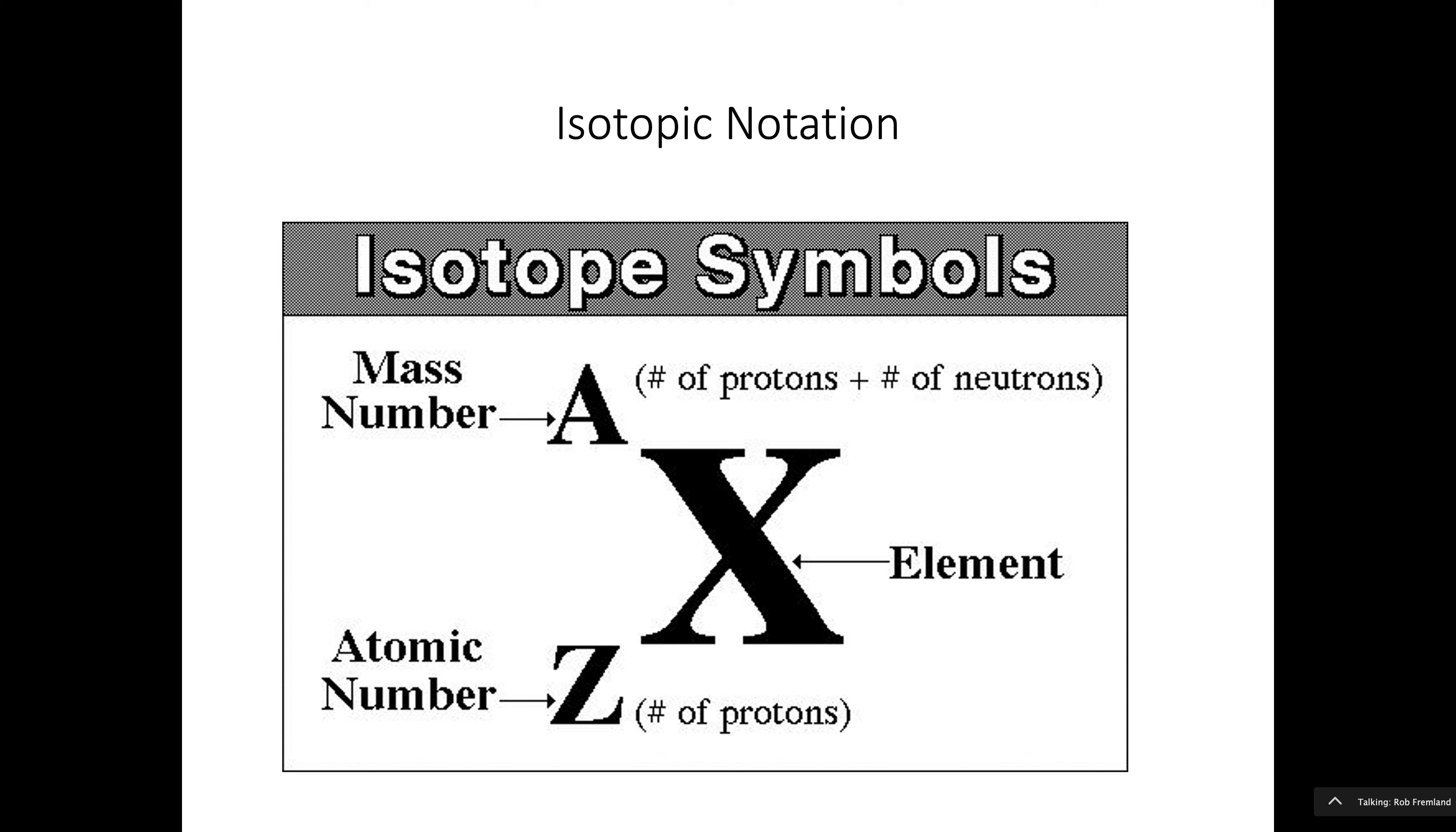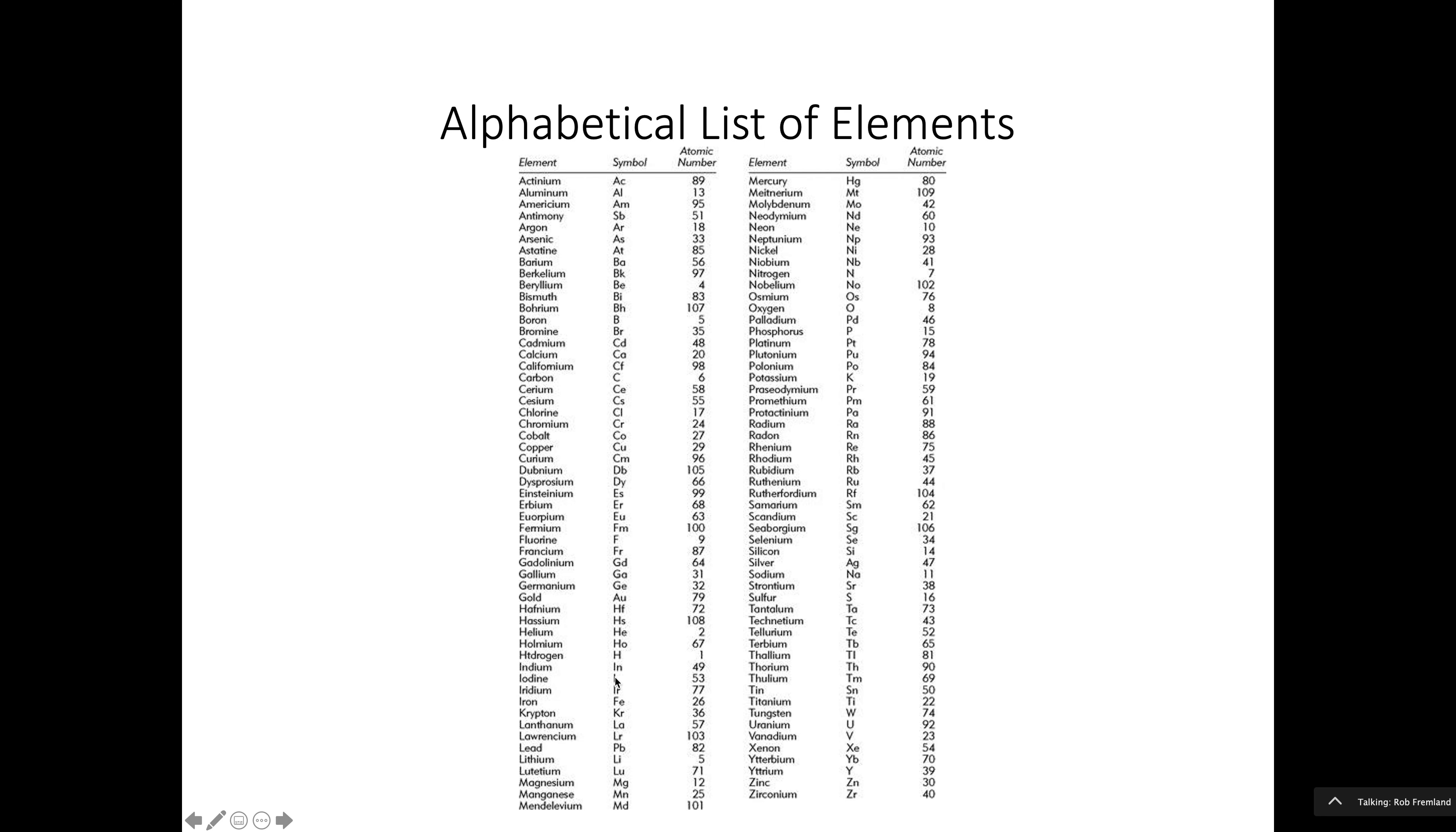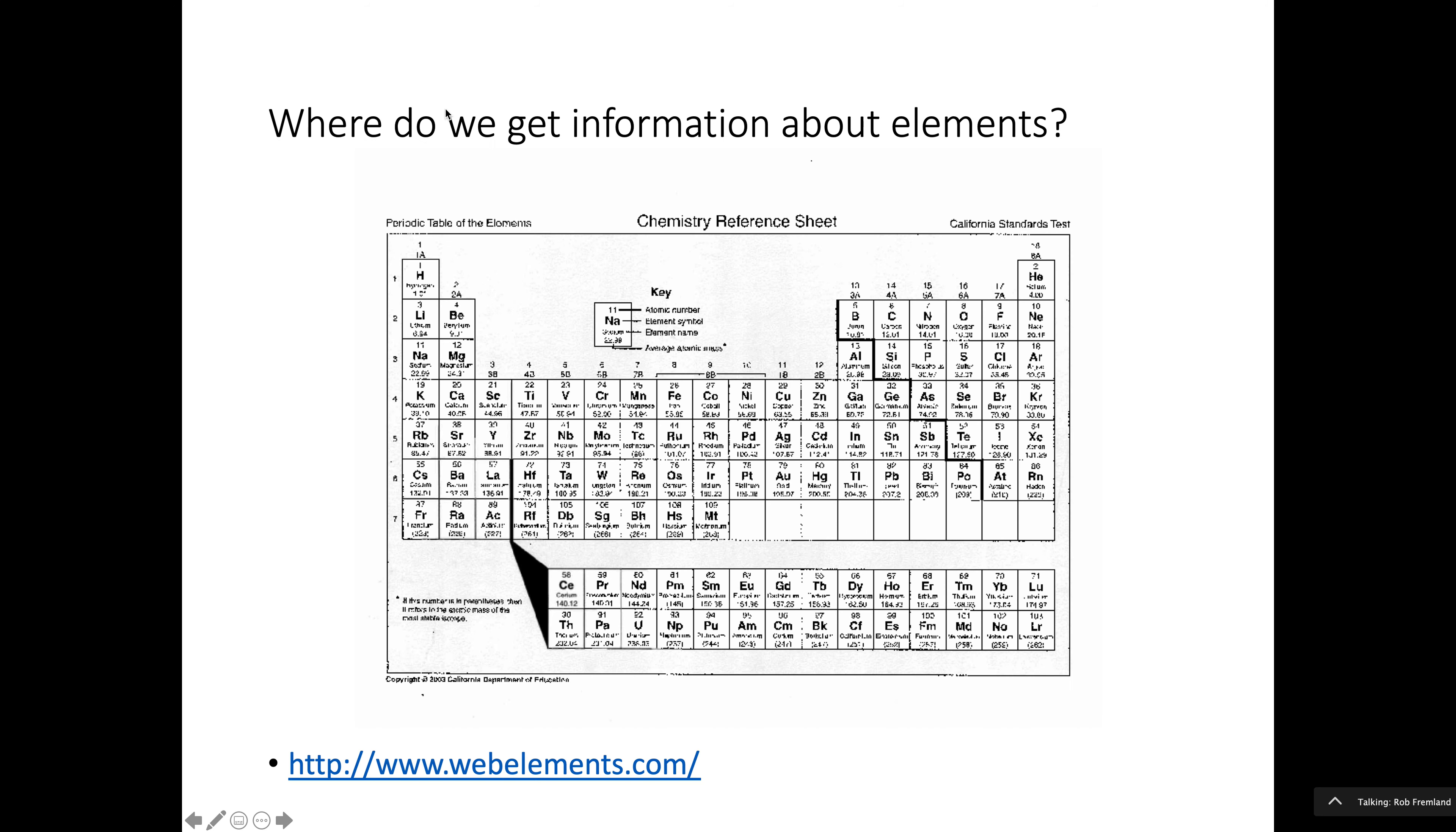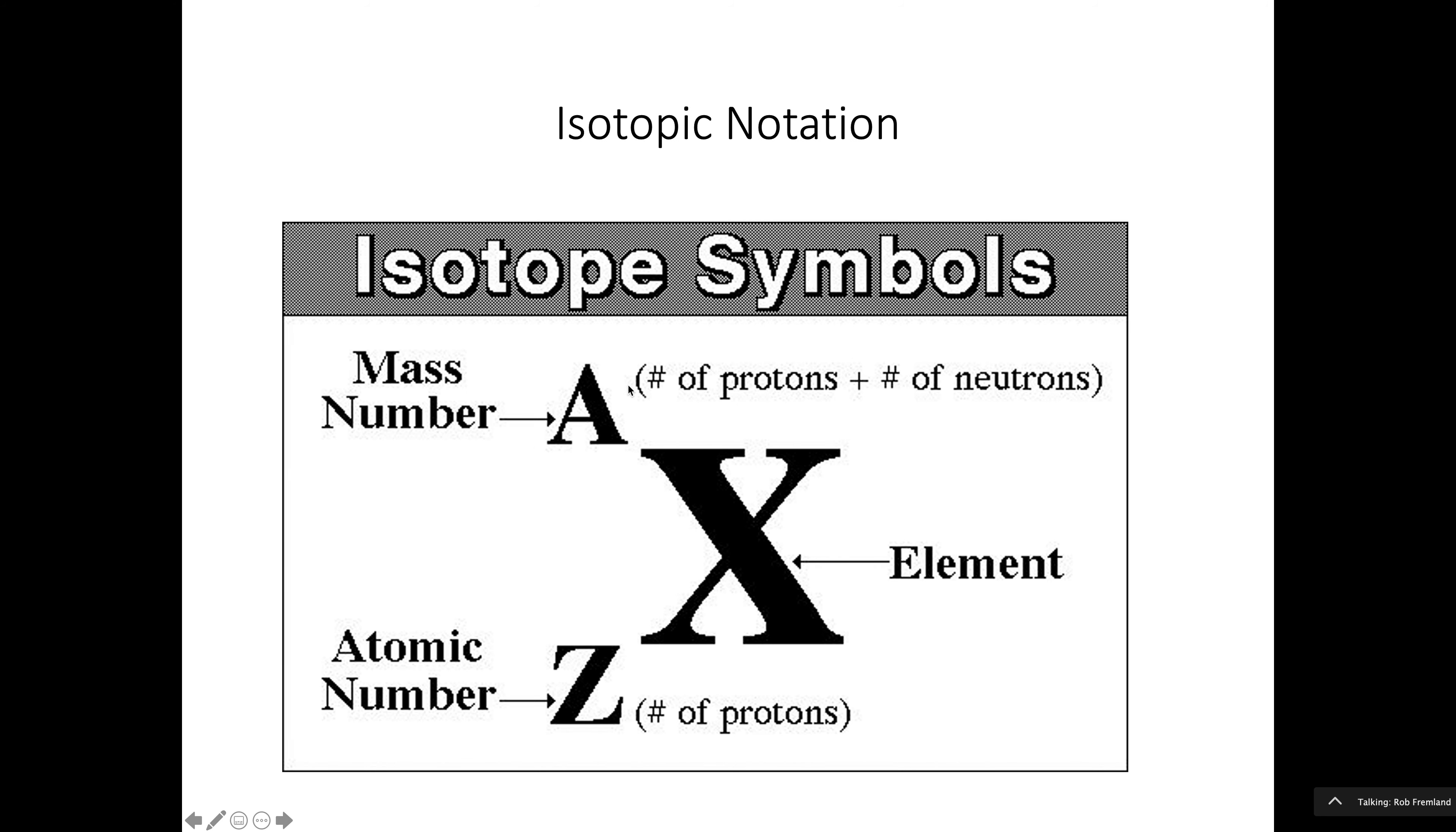Now, there's a type of notation that we use, and we use it mostly for radioactivity, which we will do a lot later. But for now, we're going to use this notation. So in this notation, the symbol of the element is X. The atomic number, the Z number, so if you back up, see the atomic number here? The atomic number is the Z number, and that's the number of protons. And if we back up two slides, you can see that the elements, the number up here, is the atomic number. So they're actually in order of atomic number. One, two, three, four, and so on.